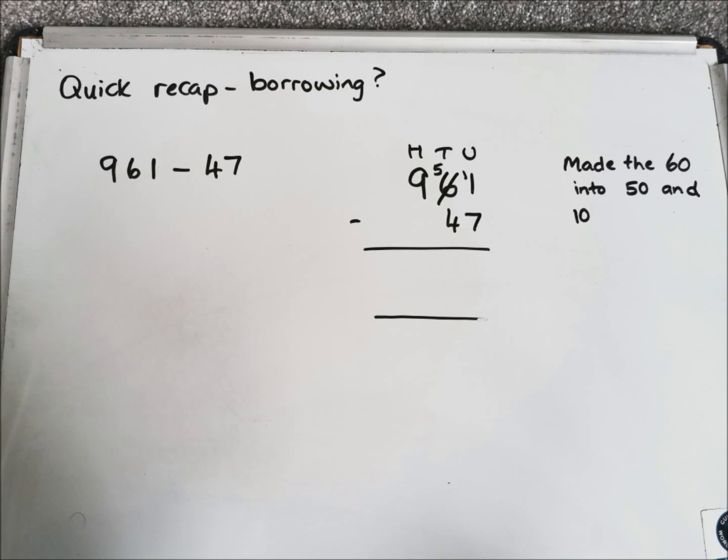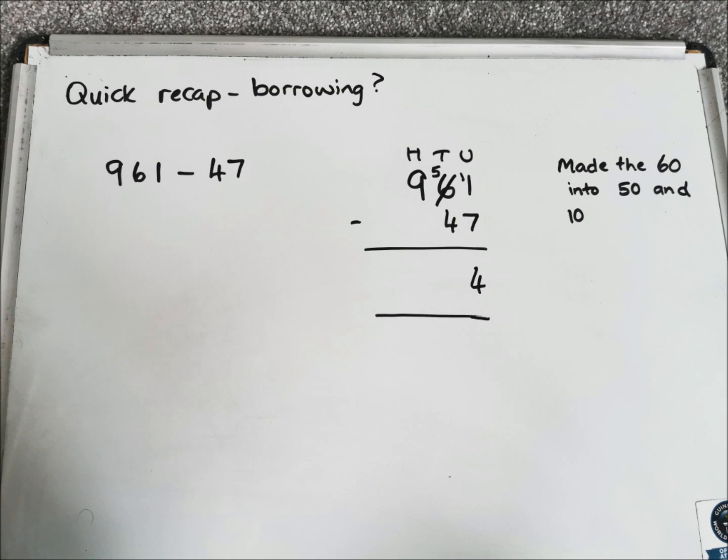This is because we're changing that 60 that was in the tens column into a 50 and a 10. So the 50 remains in the tens column, and the 10 goes over to the units column, becoming 11. So now we've got in the units column 11 take away 7, which we can do, and the answer is 4, which we pop in the answer column.